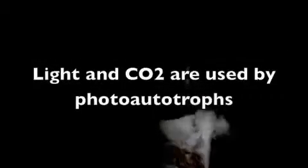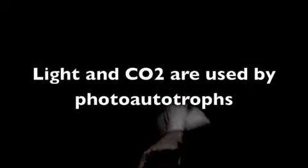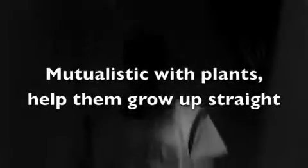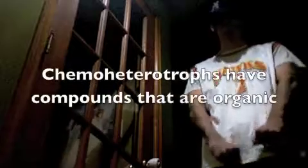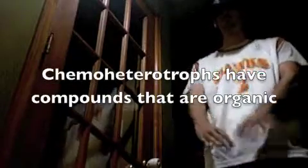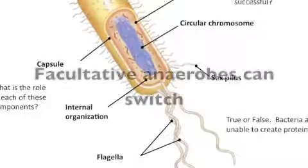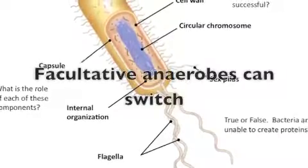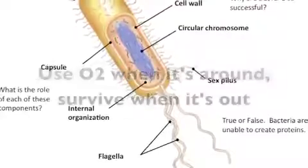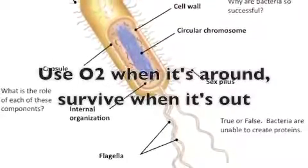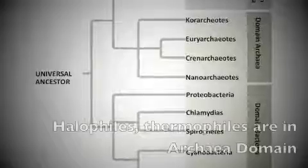Bacteria — autotrophs, heterotrophs — light and CO2 are used by photoautotrophs. Bacteria help uptake nutrients. Mutualists do good for plants, help them grow up straight. Chemo-heterotrophs can't find that organic. Facultative anaerobes can switch — use O2 when it's around, survive when it's out. Halophiles and extremophiles in the archaeo-domain.